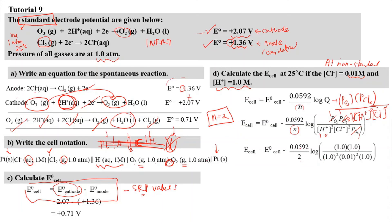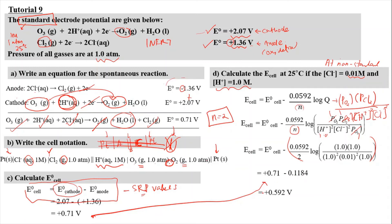Settling the calculation: E° cell is 0.71 volts. Working through the Nernst equation, we get positive 0.592 volts as the final cell potential.